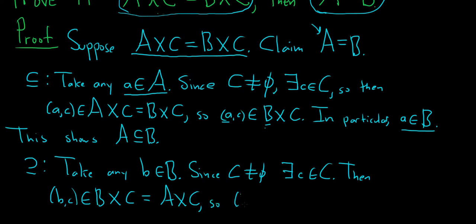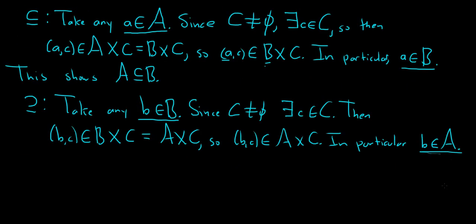So this implies that little b comma c is an element in A cross C. And again, in particular, this means that little b is in capital A. So we started with little b in capital B and showed it was in capital A. Every element of B is an element of A. Thus, we've shown that B is a subset of A.